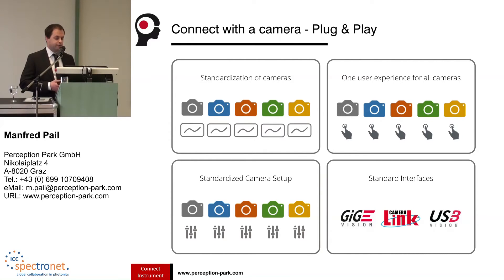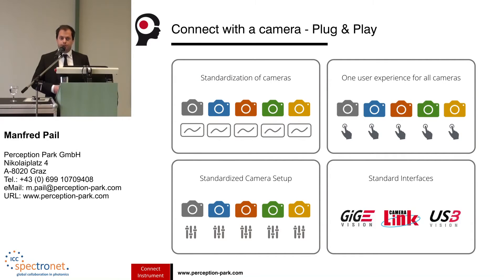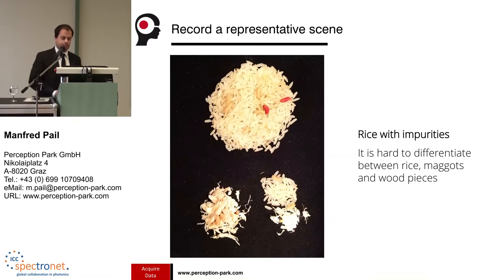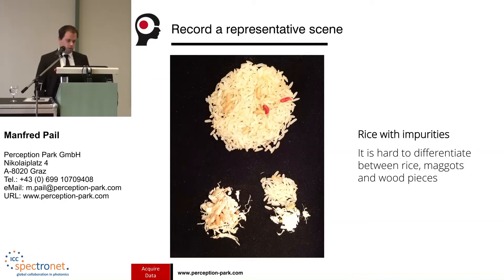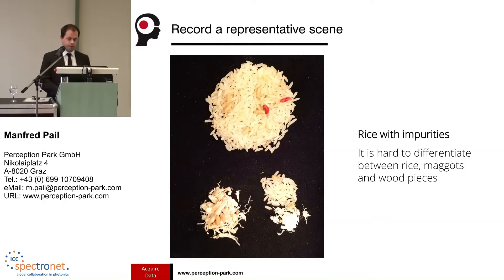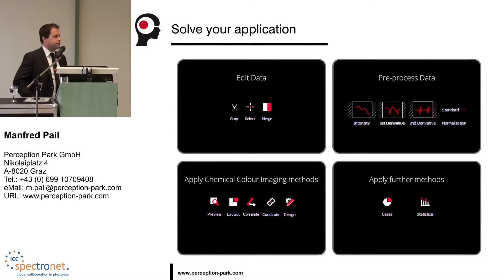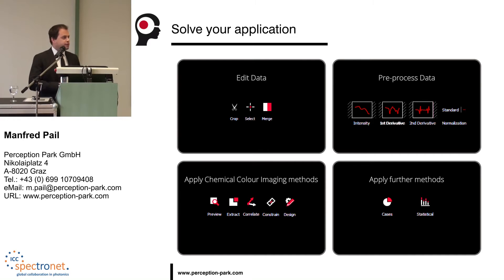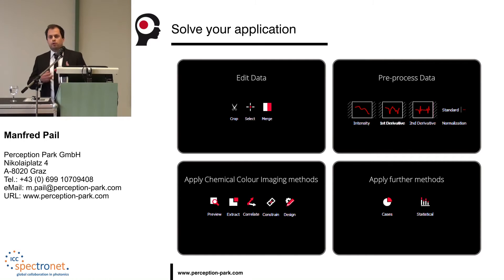We have a standardized camera setup process, so if you use a new camera from a different manufacturer, don't worry — it's always the same process. Of course, we understand standard interfaces. The next step is to record a representative scene. Here we see some rice with some maggots on it and some wood parts. Once we have recorded the scene, the Perception Studio provides several tools to edit and pre-process this data, to apply chemical imaging methods, and also to apply further methods like classification.